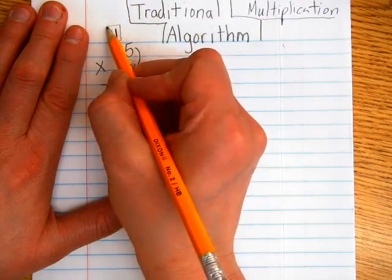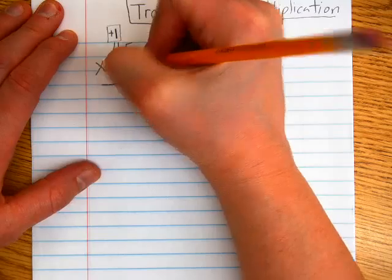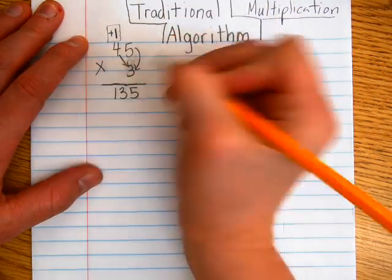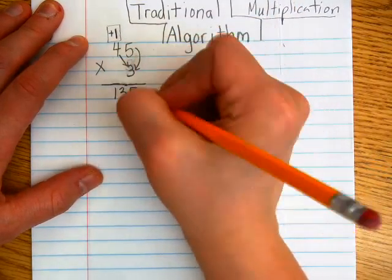To the next place value, to the tens. So we've done 5 times 3 is 15. We got the 5 here, and then we carry the 1 up here. Now, we're going to cross-multiply.